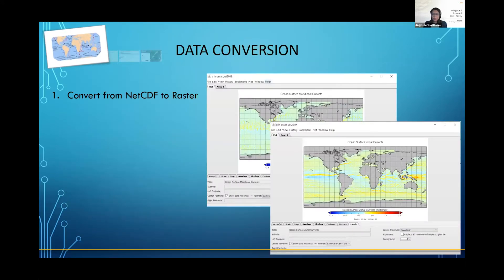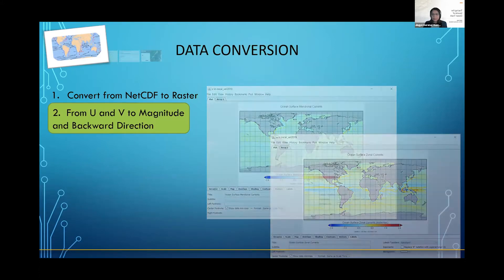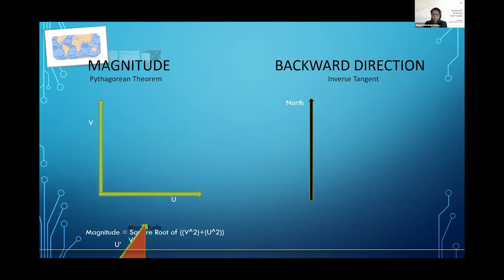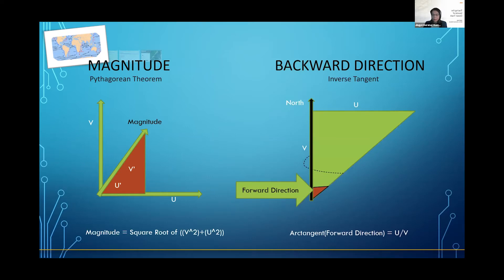Python script was used to prepare the geodatabase. First, the original data was converted from NetCDF to raster. The second step is using the meridional velocity and zonal velocity to calculate the magnitude and backward direction for the ocean current. Magnitude can be calculated with the Pythagorean theorem. The backward direction is calculated with multiple steps. Since the OSCAR data records the ocean current in the forward direction, the first thing we need to do is use the inverse tangent to calculate the forward direction, and then add 180 degrees to get the backward direction for the database.